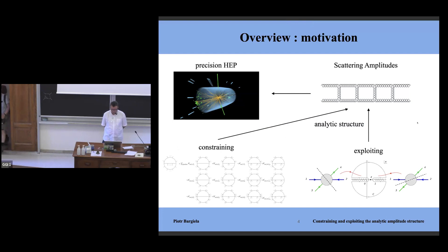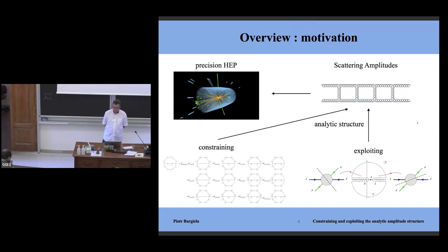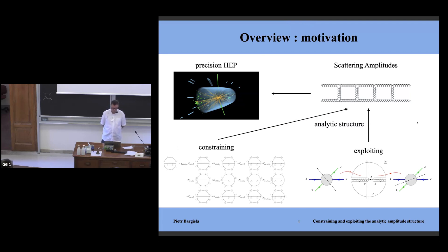I'm interested in providing scattering amplitudes for precision phenomenology at the LHC collider. To provide theoretical predictions for observables, you need scattering amplitudes in QCD or the full standard model, including the electroweak sector. We will specifically look at the analytic properties of these amplitudes — constraining them via the notion of a finite basis beyond one loop, and exploiting this analytic structure.